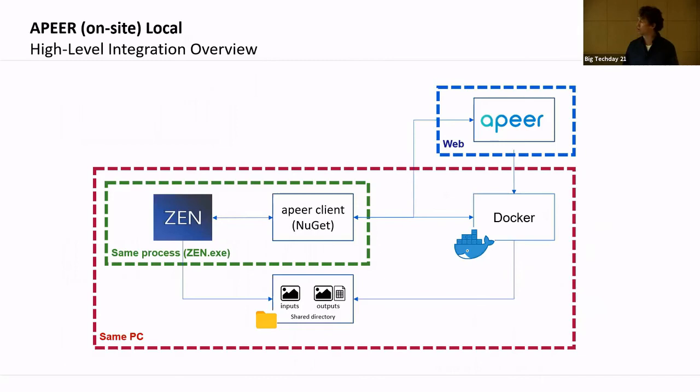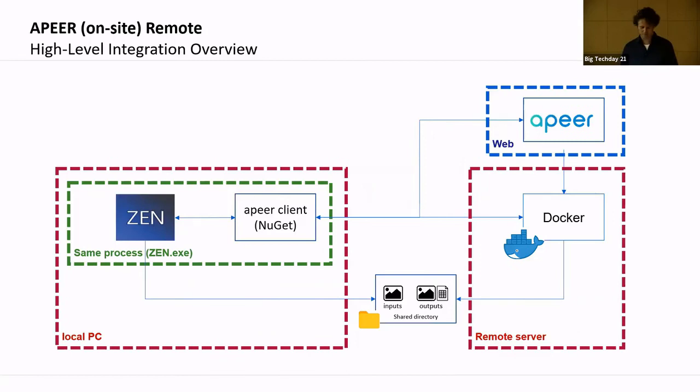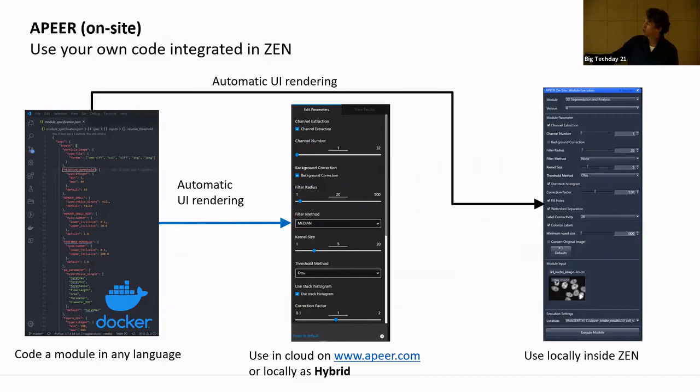The benefit of Docker is you can install it not only on your local desktop but also on a server in the basement — that's where scalable processing comes in. Our desktop solution doesn't care where Docker runs — it just needs the output. Here you see the JSON specification of a Docker module's UI. The Docker module looks like this on the backend, and this is what it looks like in our software — the UI is rendered automatically from the JSON spec.